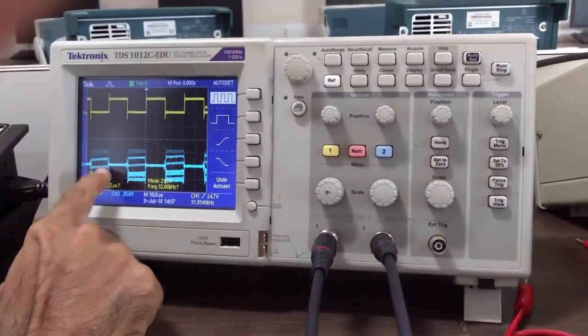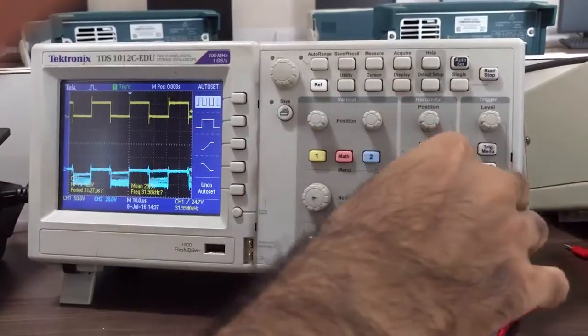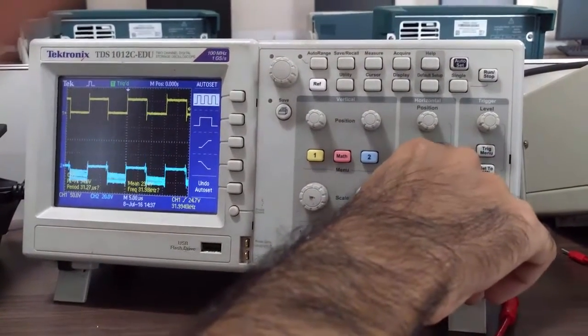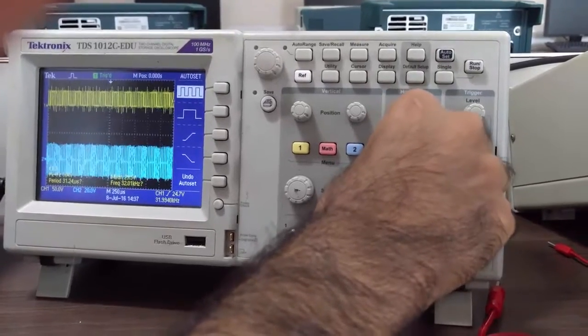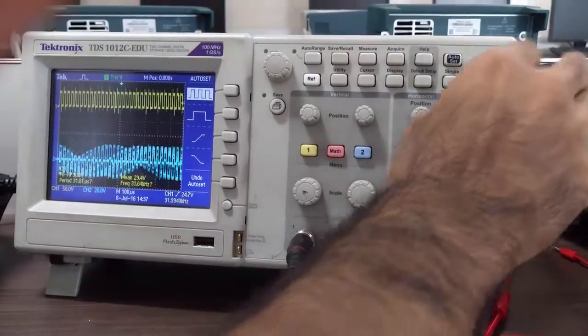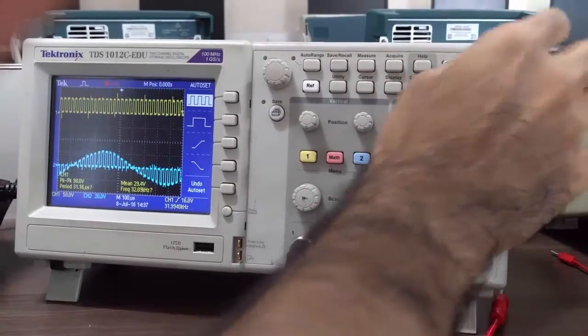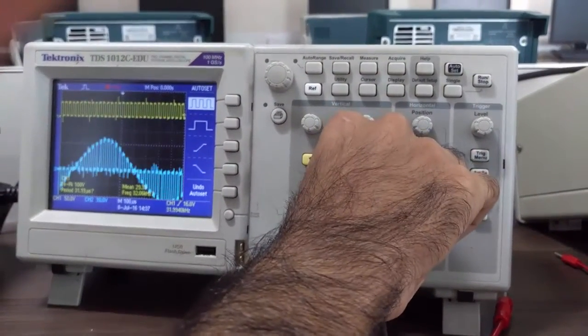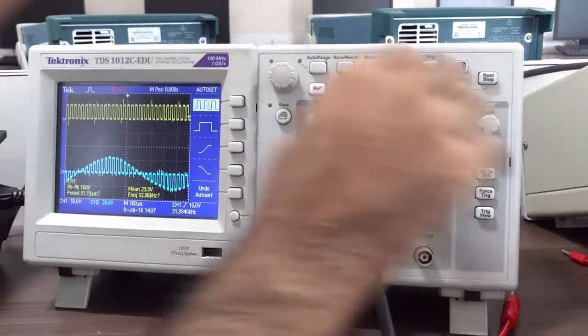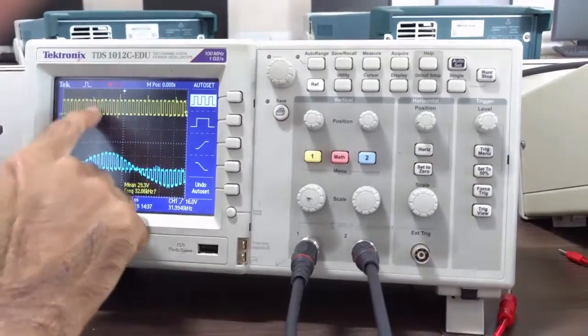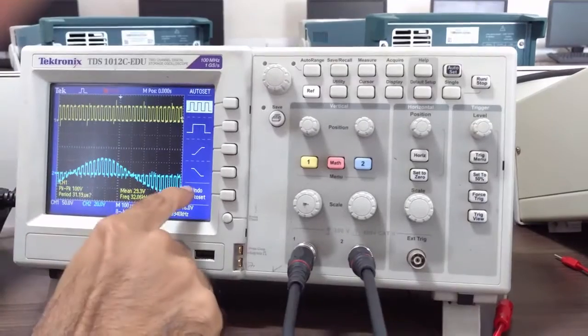If you are not getting the proper waveform, you need to just auto set and you can scale it as per required. Once you get the sine wave, just stop it and you can see the sample version. Now you can see the pulse input over here and the sample output over here.